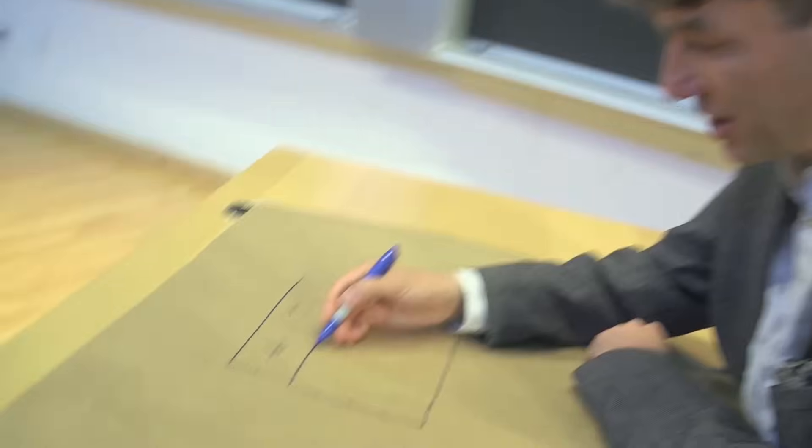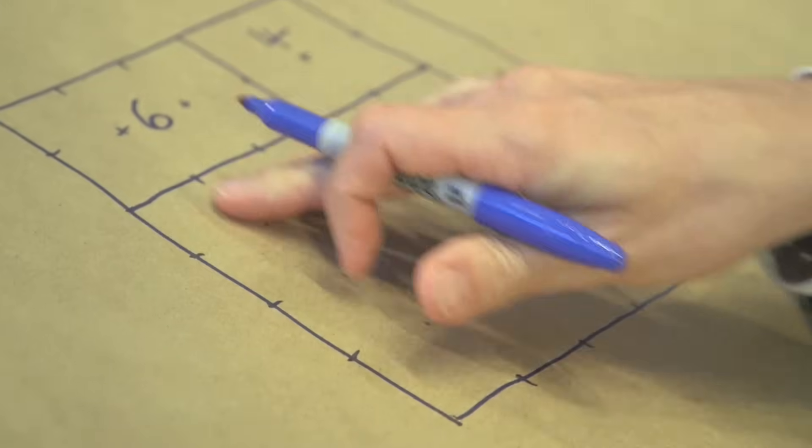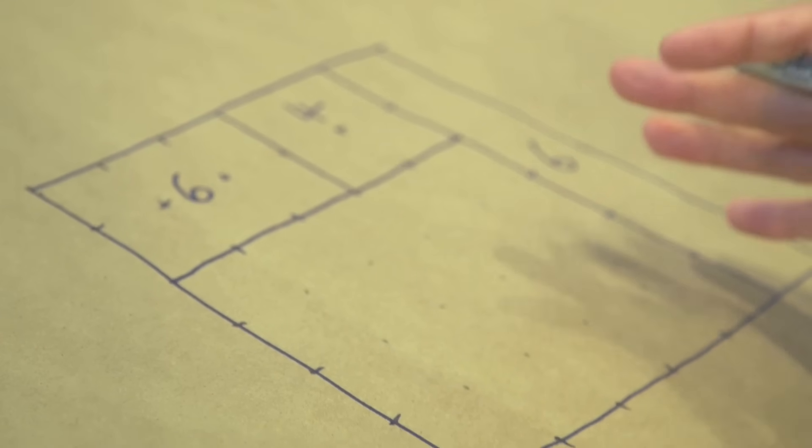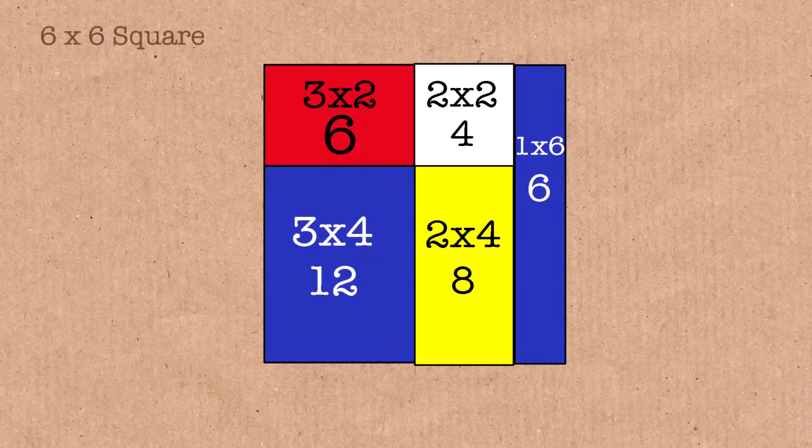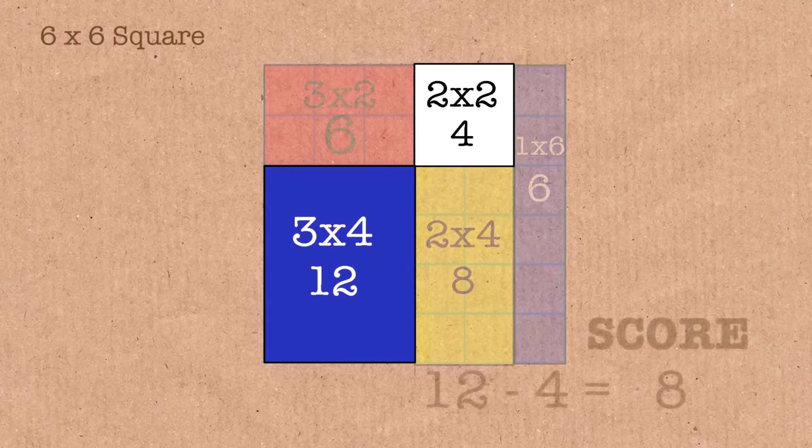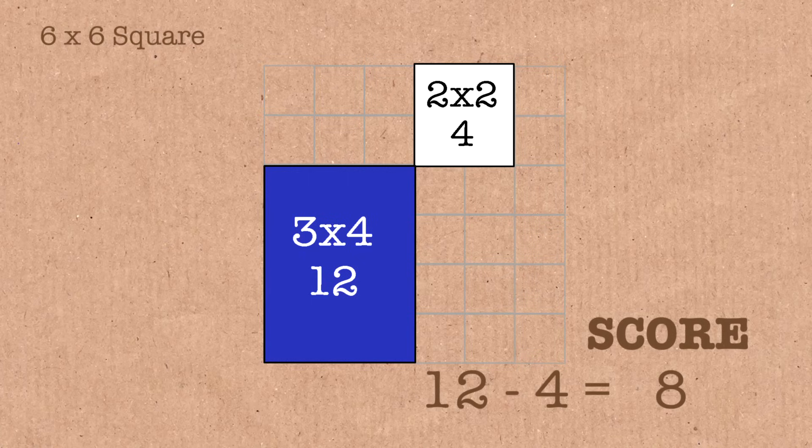So what could we do? We could split this into an 8 here and a 12. We could do that. And so now our score is 12 minus 4 is equal to 8. You can tell Mondrian, you are scoring this an 8.